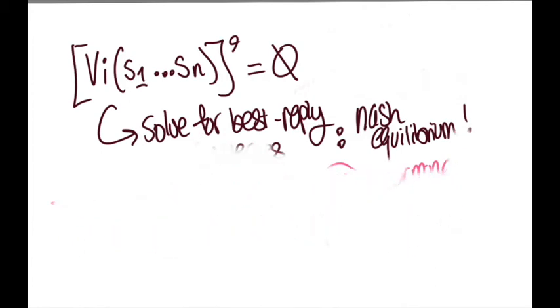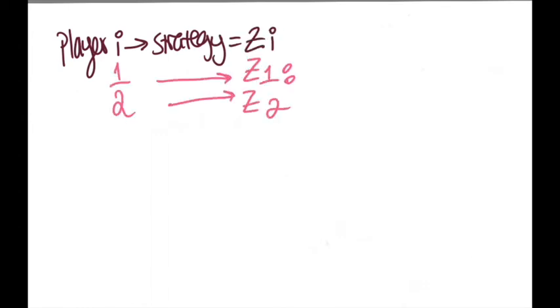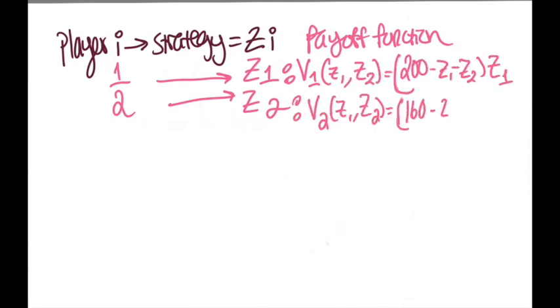To further explain this concept, let's look at an example. Let's say players 1 and 2 are playing a game in which the strategy of player 1 is denoted as z1 and can be any non-negative real number. The payoff function for player 1 and player 2 is defined as follows.